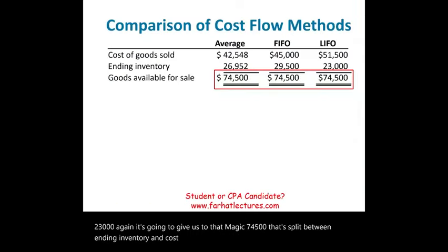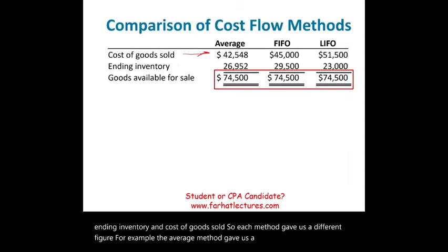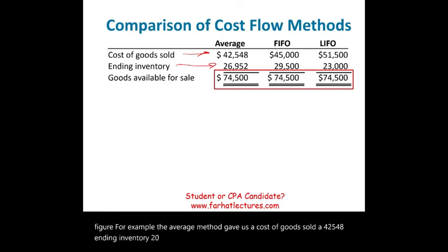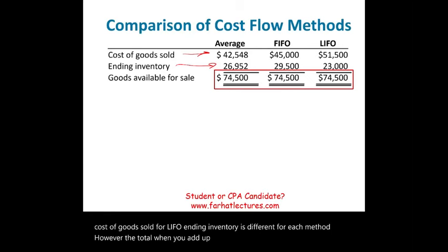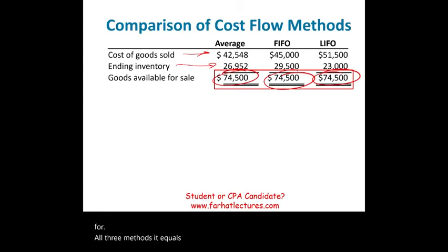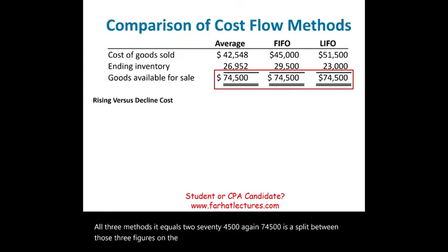Each method gives a different figure. Average cost of goods sold: ~$47,548, ending inventory ~$26,952. FIFO: cost of goods sold $45,000, ending inventory $29,500. LIFO perpetual: cost of goods sold $51,500, ending inventory $23,000. However, for all three methods, cost of goods sold plus ending inventory always equals $74,500.